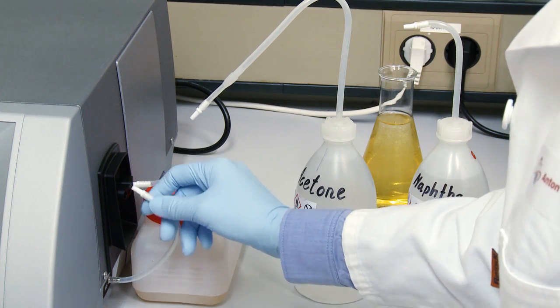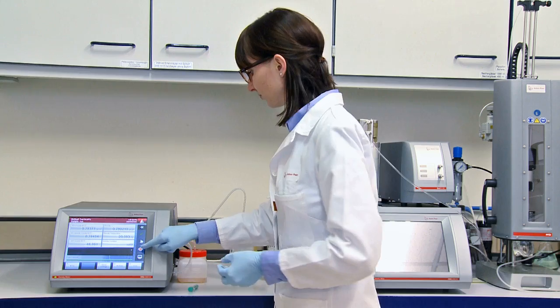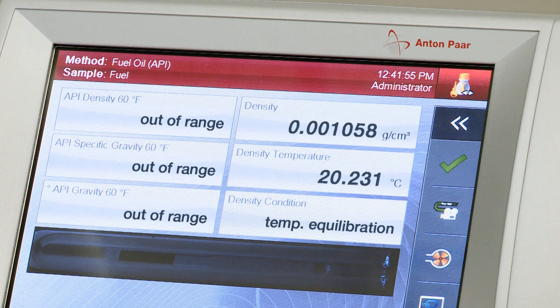Now we can dry the measuring cell. Why do we want to dry the measuring cell? Firstly, because I don't want to mix the previous sample with the next one. And secondly, because I can then let the instrument automatically check the air density after the measurement. A correct value indicates that everything is in order.